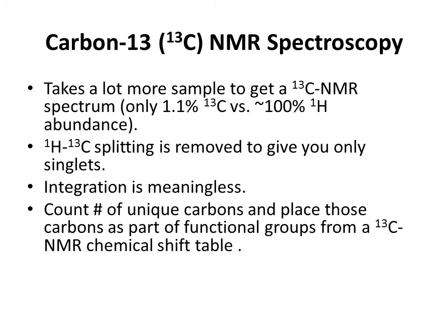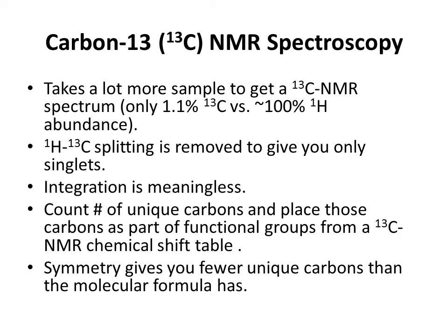You count the number of unique carbons in the carbon-13 NMR spectrum — that's what the spectrum tells you. All those different carbons are unique, and you place those carbons as part of functional groups, which you determine from a carbon-13 NMR chemical shift table. Symmetry gives you fewer unique carbons than the molecular formula has, because if a carbon atom is symmetrical to another carbon atom, it will show up as one peak, not two.